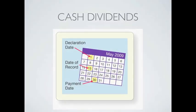When we pay out a cash dividend, there are three things that happen: there's a declaration date, there's what's called a date of record, and of course the date we pay the dividends. Let's discuss these three briefly.